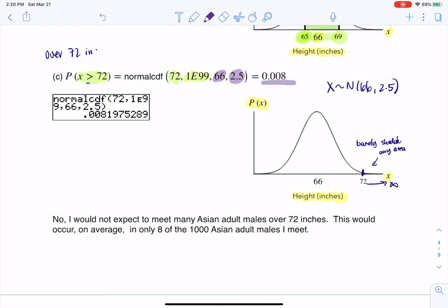So would I expect to meet an Asian male that was over 72 inches tall? The answer is no. No, I wouldn't. So in stats, anything less than 5% is considered rare. And for here, this is less than 1%, so it's definitely rare.